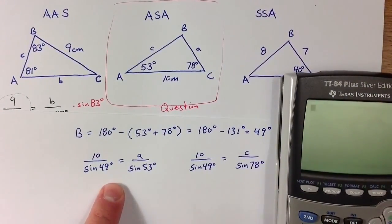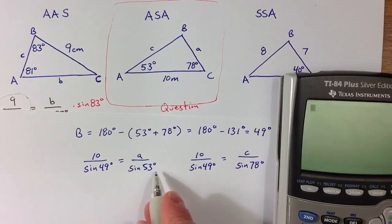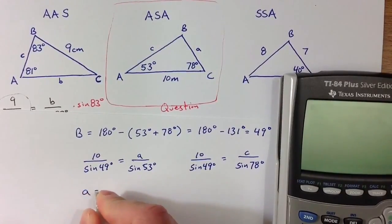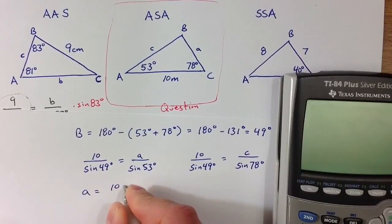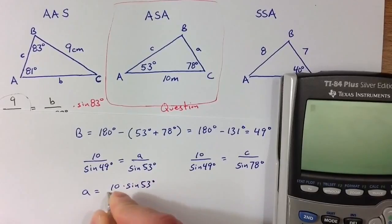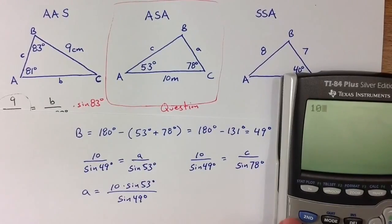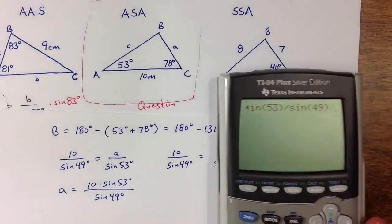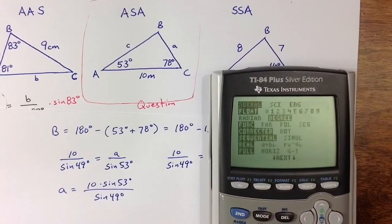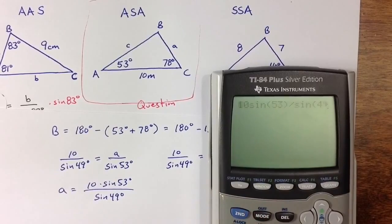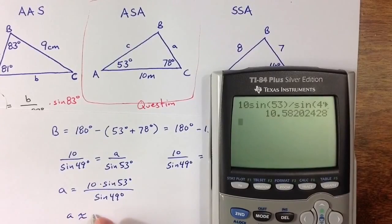If I take this first equation and multiply sine of 53 on both sides, that solves the equation for A. So I get A equals 10 times sine of 53 degrees divided by sine of 49 degrees. It's important to make sure your calculator is in degrees — we are in degree mode. The value for A should be approximately 10.582 meters.